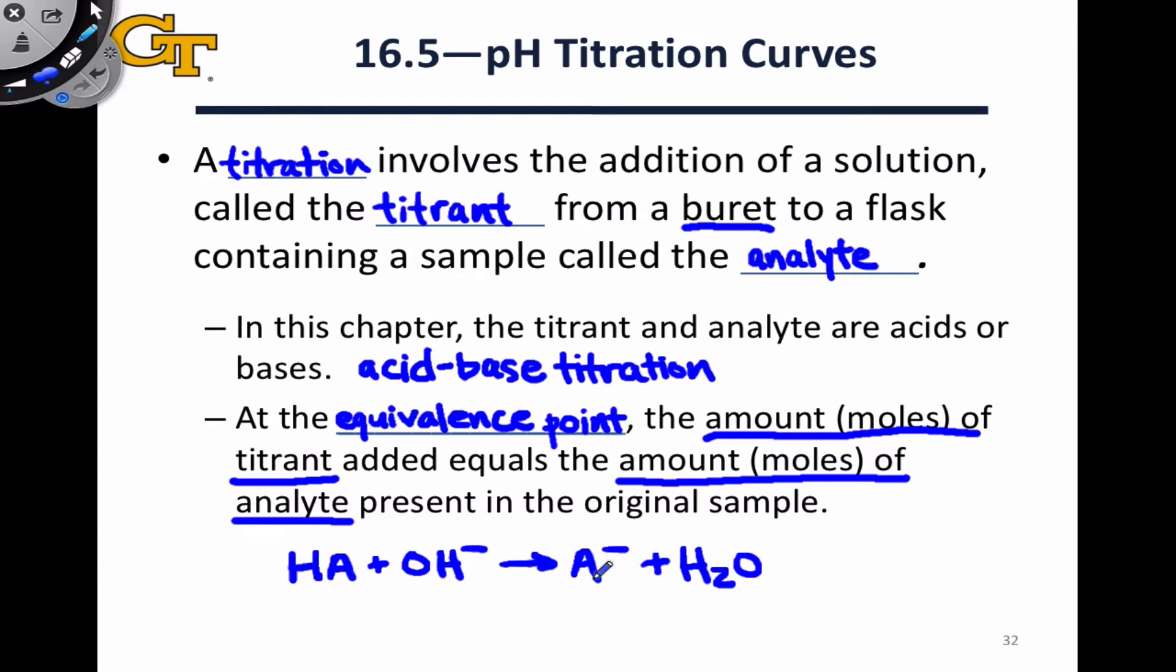So on a basic level, titration allows us to determine the concentration of the acid based on the number of moles of hydroxide, for example, that we add in via dripping from the burette.